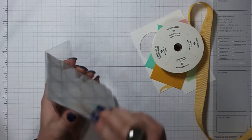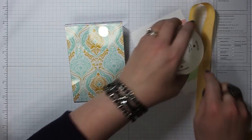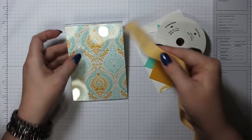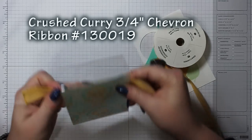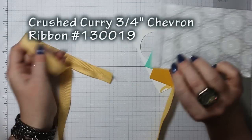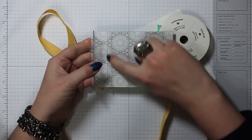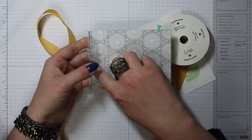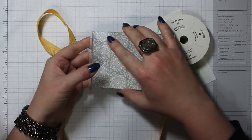The next part, I take ribbon, coordinating ribbon, and this is Crushed Curry ribbon. Crushed Curry is one of the colors in this designer series paper, and I tie it around. I should show you this on the back. There's going to be a place where the acrylic photo frame ends and there'll be about an inch to the top.